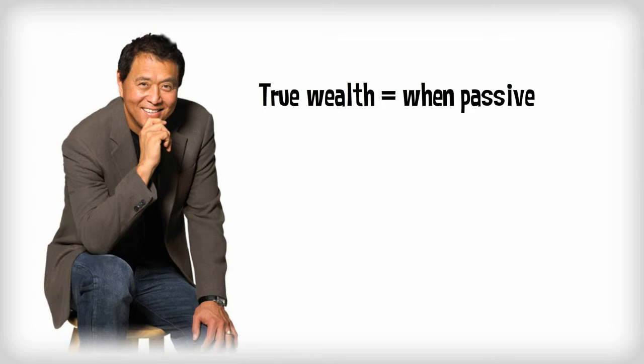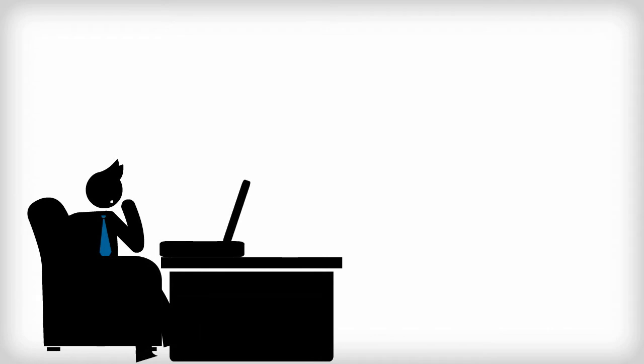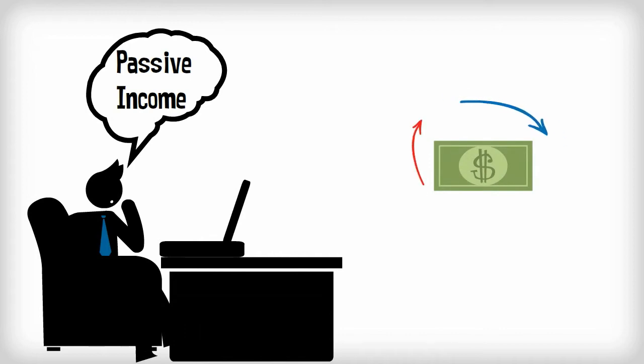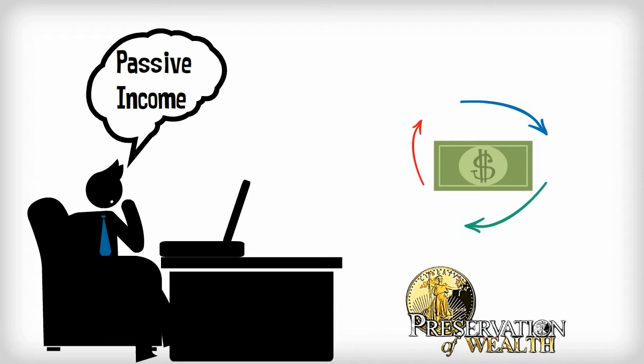Robert Kiyosaki said it best. He said, the definition of true wealth is when your passive income exceeds your living expenses. Everyone watching this presentation has living expenses, but do you have passive income? Where you do something one time and get paid month after month after month. That's what you'll have with Preservation of Wealth.